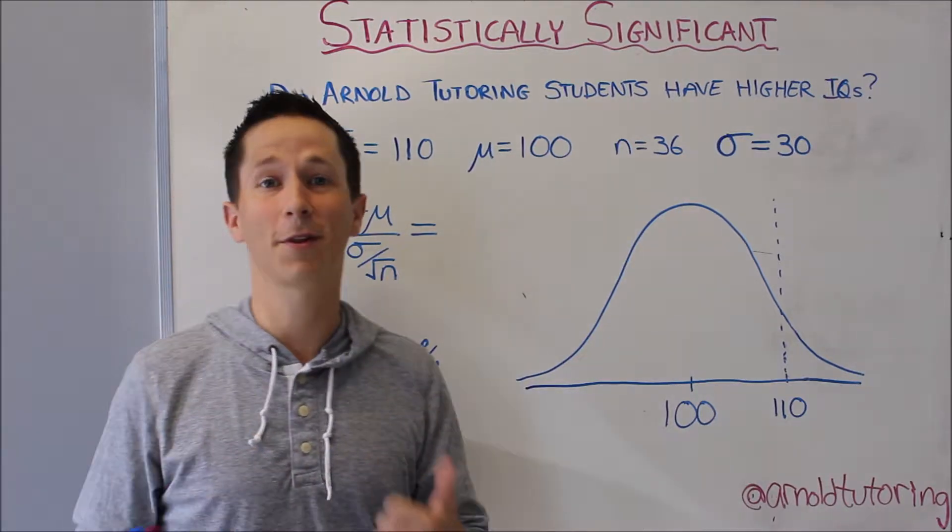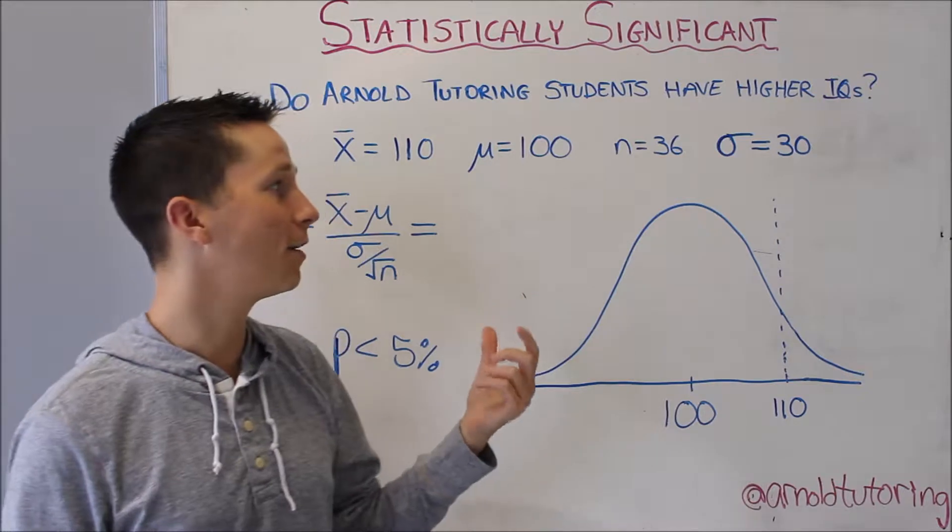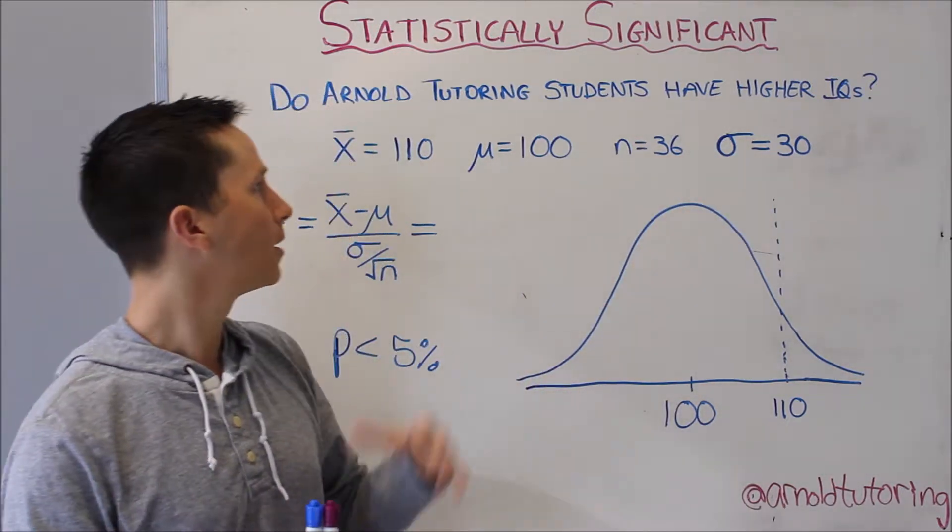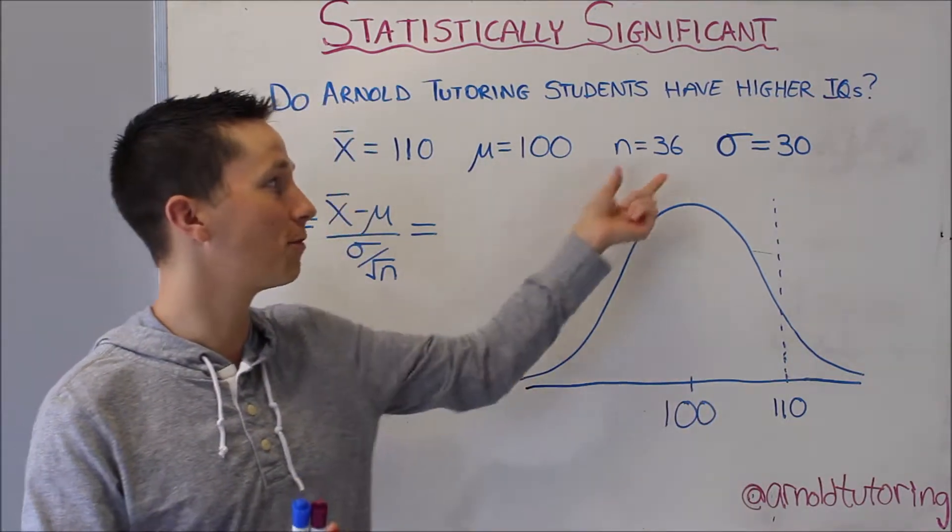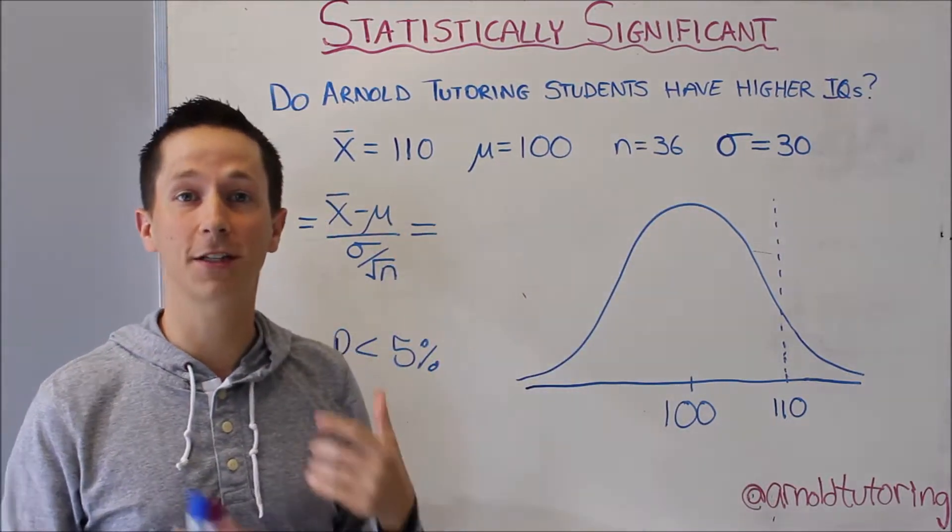First we need to know what the population looks like. The population mean IQ, or the average, is 100, and the standard deviation is 30. Don't worry about that too much. But to test this out and see if Arnold tutoring actually has an impact, we're gonna survey 36 Arnold tutoring students and find that their average is 110.